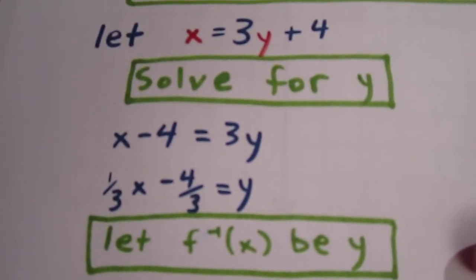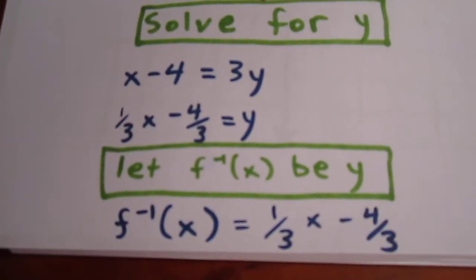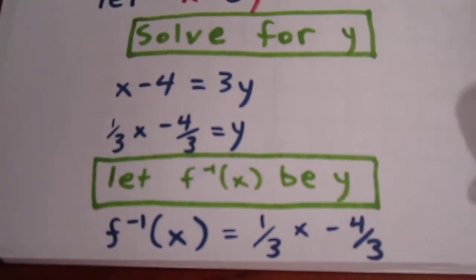Now we let f inverse of x be y, and we're able to say that f inverse of x is 1 third x minus 4 thirds.